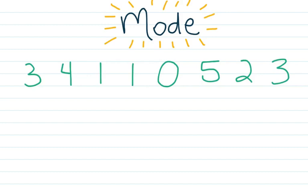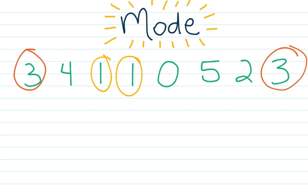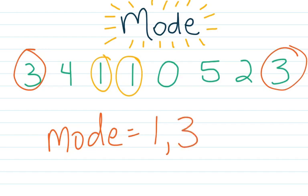I see that I have two ones, and I also see that I have two threes in this data set. That means I'm going to have two modes. They both appear more than one time—they both appear twice, to be more specific. So my modes, plural, are going to be one and three. You can have two modes, and in this case, I do.